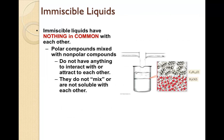Immiscible liquids, however, are liquids that have nothing in common with each other. For instance, polar compounds mixed with nonpolar compounds will not combine, such as oil and water. Here's another example: pentane in water. Pentane is nonpolar because it's just carbon and hydrogen — there's no oxygen to pull away the electrons — whereas water is polar. They have nothing to interact with or attract to each other, so they do not mix or are not soluble with each other. That's an overview of solubility and the kinetic molecular theory in liquid substances.